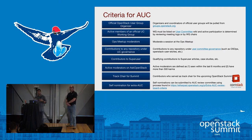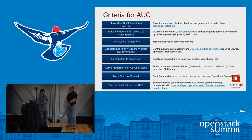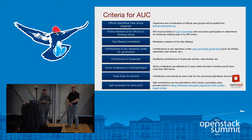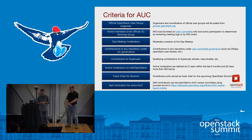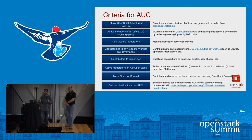We also have the Ops Meetup, which is actually happening today at the summit. If you sign up and moderate a session at the Ops Meetup, that also counts towards AUC. Contribution to any repository under UC governance also qualifies — the UC repositories include the OS Ops repo where you can contribute tools, scripts to make your life easier as an operator, or share best practices. There's also the Product Working Group, which has a user story repository — if you have a concept for a feature that would be nice to have in OpenStack, you can write a user story and contribute it to the repository, and that counts towards AUC as well.